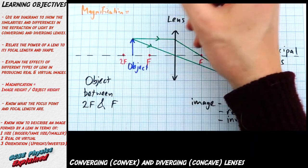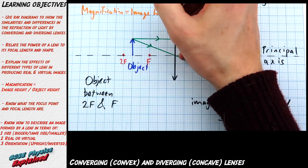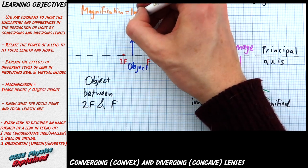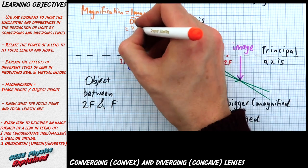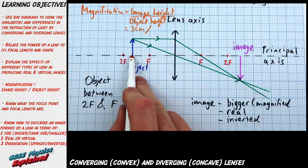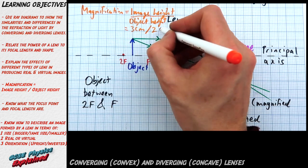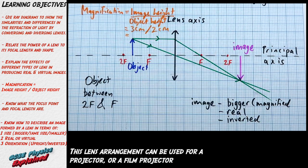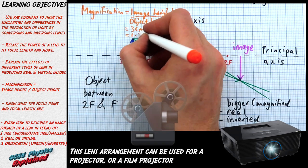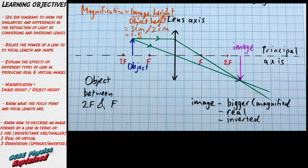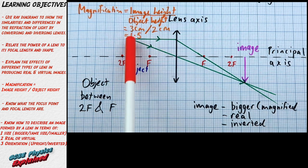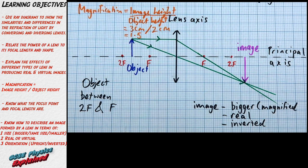Magnification equals image height divided by object height. The image height is three centimeters, so we'll divide that by the object height of two centimeters. So the magnification will be one and a half, and there are no units because the units cancel out — centimeters divided by centimeters cancels out. Or if you were doing it in millimeters, millimeters divided by millimeters, the units would still cancel out.